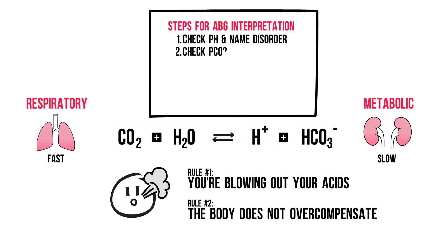Step 2: Check pCO2. As stated, pCO2 represents our fast respiratory system. If pH was normal and pCO2 is also normal, there's no acid-base disorder — you're done. Now if you did have an abnormal pH, look again and ask yourself: does this pCO2 explain my pH? Remember that you're blowing out your acids. So if your pH was high — alkalosis — and pCO2 is low, that does explain it and it's a respiratory alkalosis. If it doesn't explain it, it's probably a metabolic alkalosis. Check in step 3.